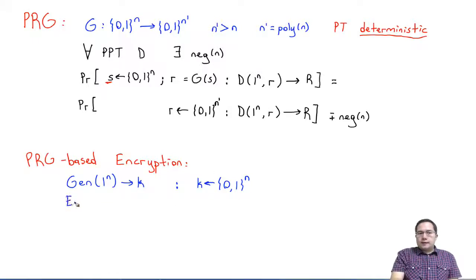We need an encryption algorithm that takes this key and a message in the message space and produces a ciphertext. It will work as follows. It will compute G of our key K. And then, as in one-time pad, it will XOR it with the message M. And this will be the resulting ciphertext.